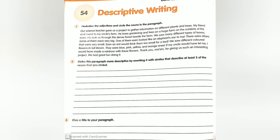Now rewrite the paragraph with similes describing at least three of the nouns you circled. Our science teacher gave us an interesting project to gather information on different plants and trees. My best friend and I went to my uncle's farm. He loves gardening and lives on a farm on the outskirts of the town. The farm is as huge as a spaceship. He took us to the dense forest where we saw different types of leaves. Some leaves were as big as an elephant's ear, and some were too tiny to even be beds for ants. We saw many flowers and plants. The colorful flowers blooming all together looked like a rainbow on the ground. Thank you, ma'am, for giving us such an interesting project. We had great fun doing it. Give a title to your paragraph: An Amazing Project.